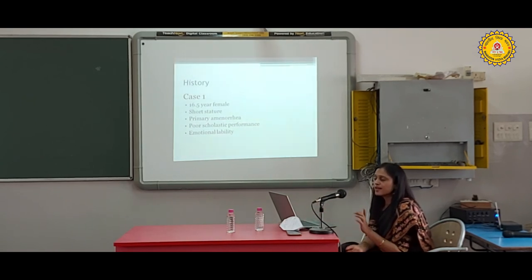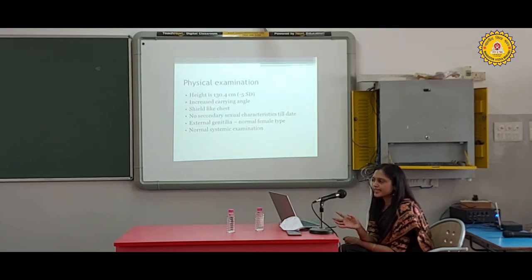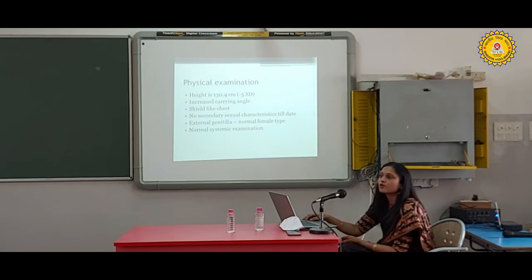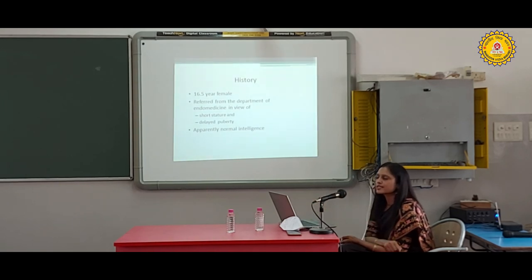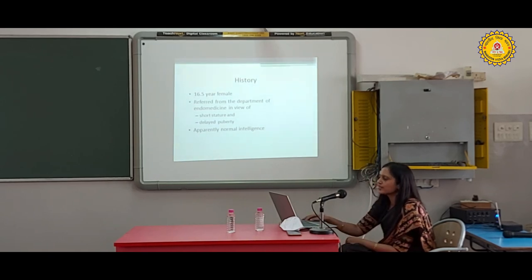Now, two case studies: This case came at 16.5 years of age with short stature, primary amenorrhea, and poor scholastic performance. Height was 130.4 cm with increased carrying angle, shield-type chest, no secondary sexual characteristics, but normal female external genitalia. At 16.5 years, we cannot improve the height - it will remain only 130 cm. The second case also came at 16.5 years. This shows lack of awareness in our community about these disorders. If we are aware about short stature early, we can identify abnormal children or children with syndromes and help improve their height.